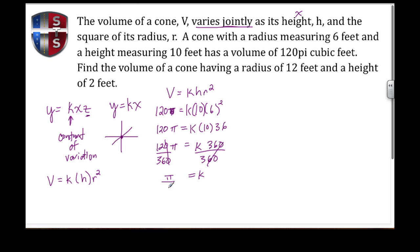I can first divide by 10 to get rid of those zeros, then divide by 12. 12 divided by 12 leaves one, so I keep π at the top, and 36 divided by 12 gives me 3. So my constant of variation is π over 3.